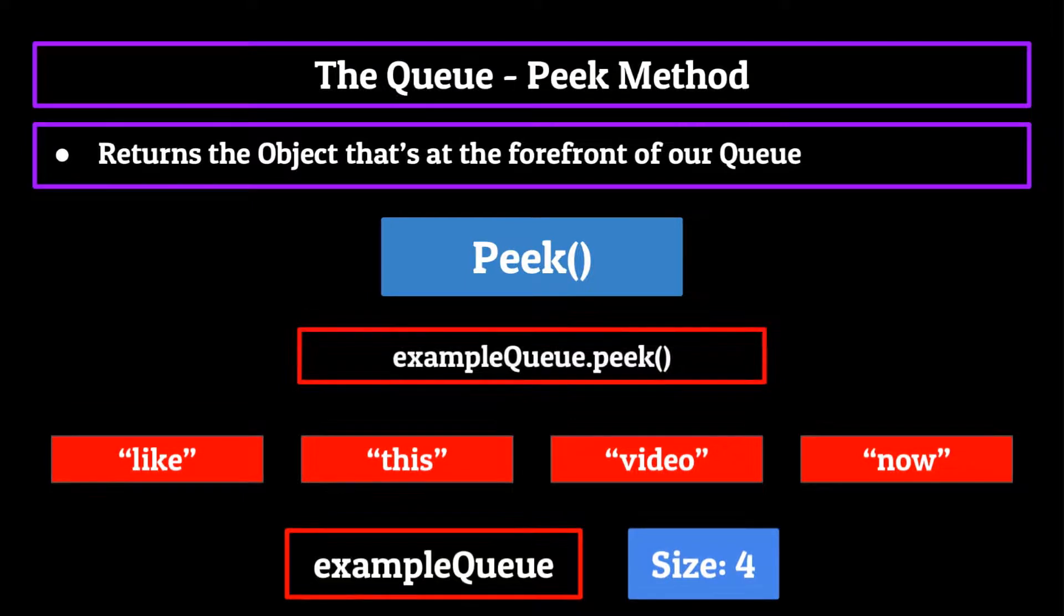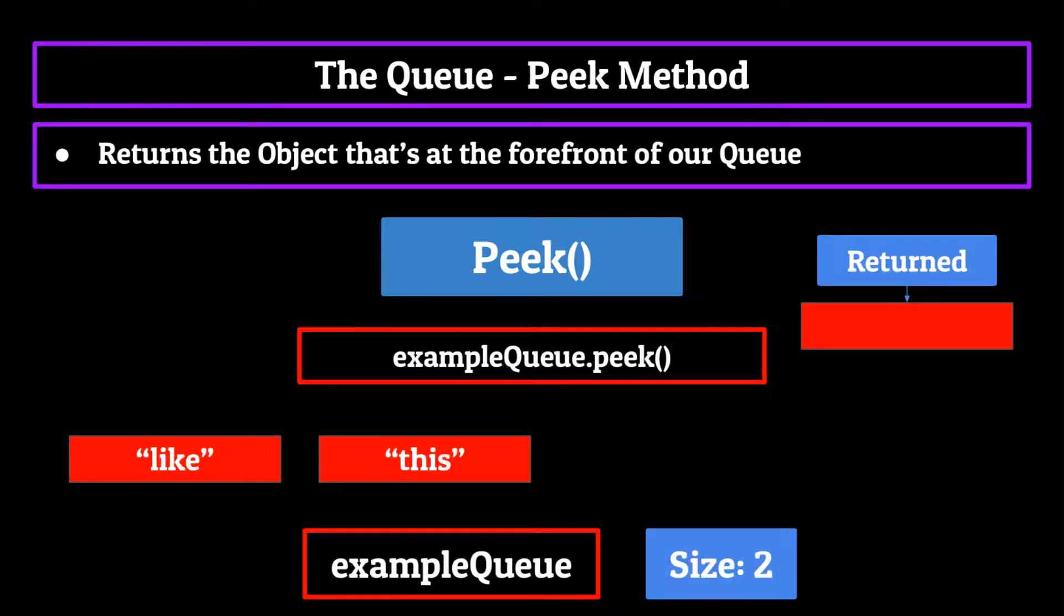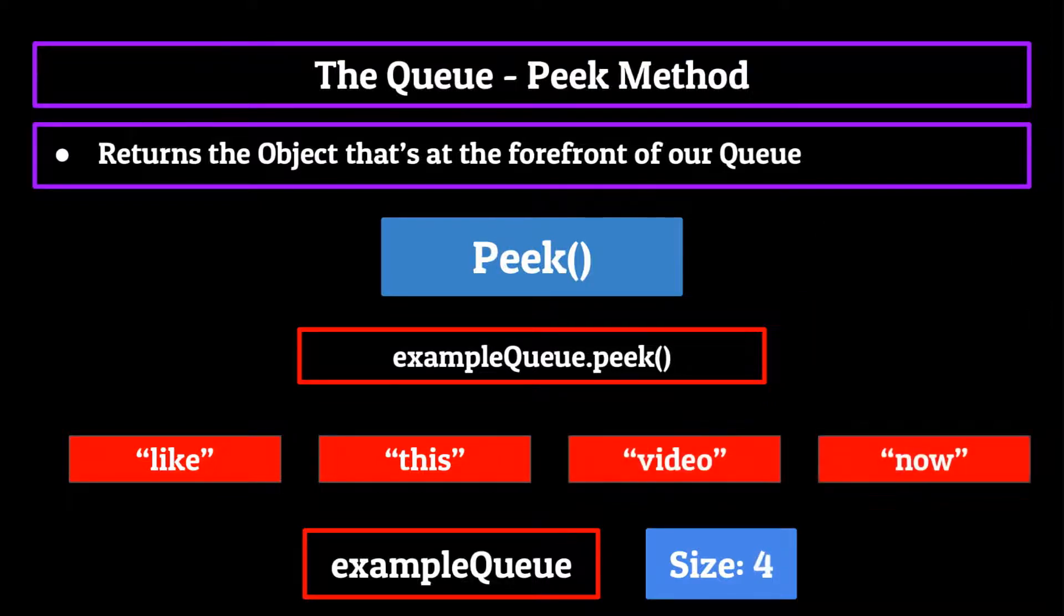If we were to run it on our example queue, you'd see that now is returned back to the user, but if we dequeue the first two elements and run it again, you'll see that this is returned. Pretty simple, but extremely effective. Again, let's add video and now back into the queue for our next method.